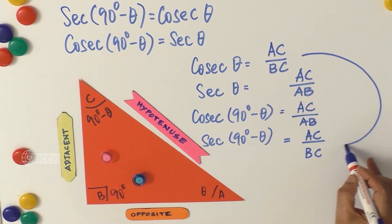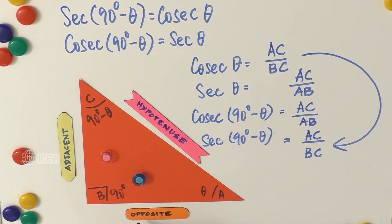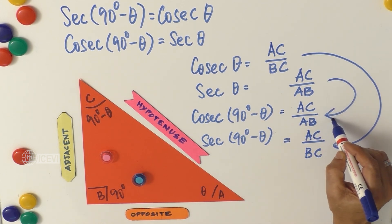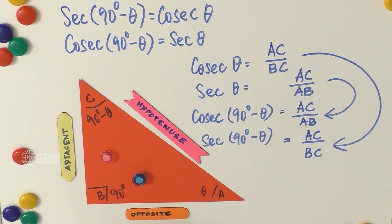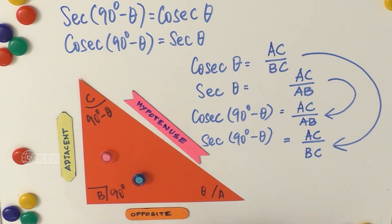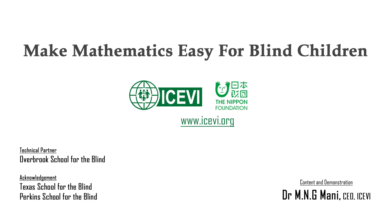Now we can compare the formulas. Cosecant theta is AC divided by BC, which equals secant(90° minus theta). And secant theta is AC divided by AB, which equals cosecant(90° minus theta). This completes the proof. In the next example we will take either 30° or 60° and show how we get the numerical values. Thank you.